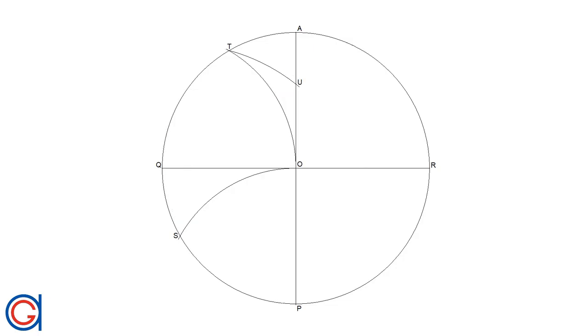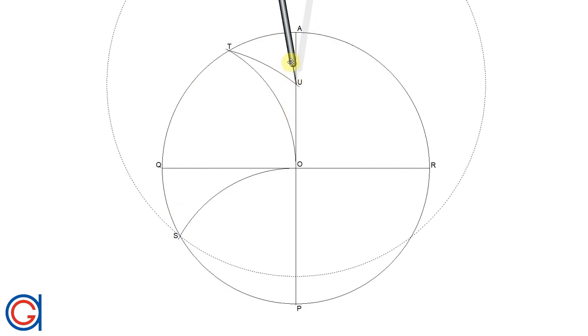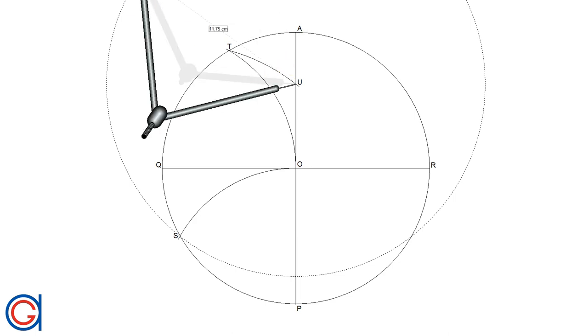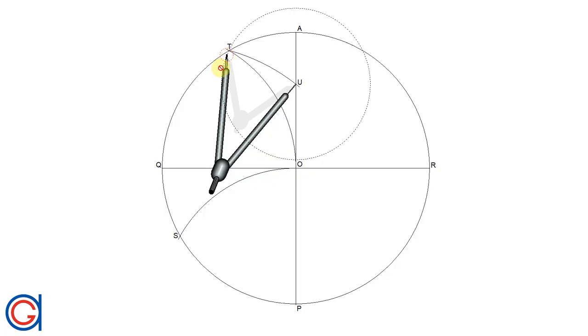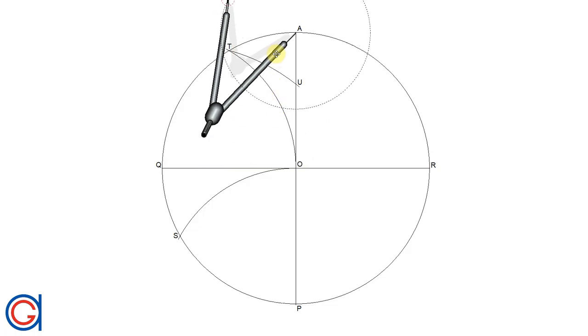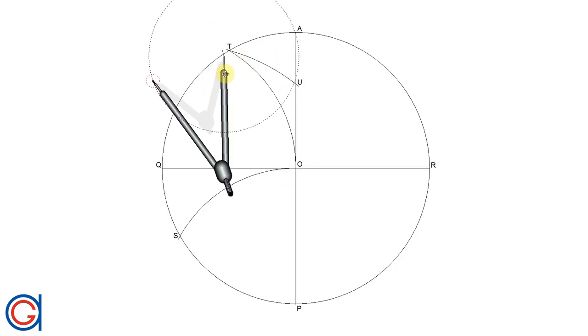So the straight line distance between T and U is going to be the length of the side of the hendecagon or 11-sided polygon that we are going to draw. So finally, to complete our 11-sided regular polygon, we set our compass to the length TU. We are going to translate this length 11 times onto the circumference of the circle. So starting with point A, setting our compass on point A, we scribe our first length as shown here.